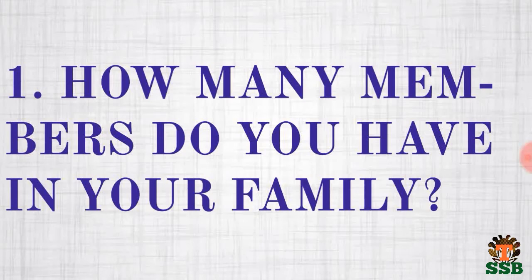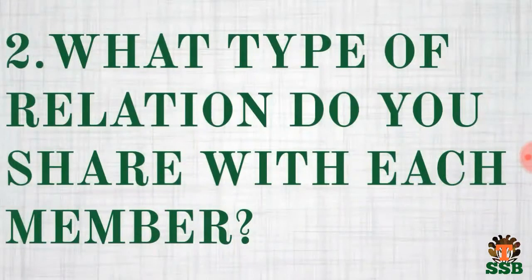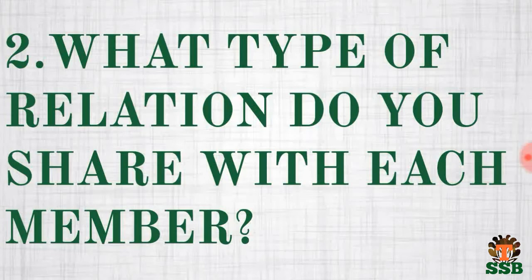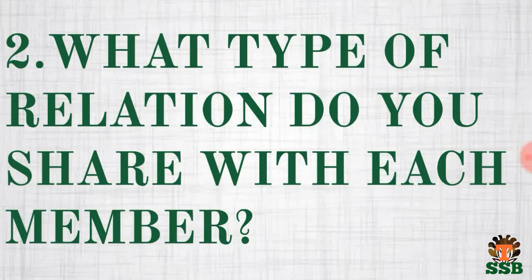Moving to the second question: what type of relationship do you share with each member? This is a tricky question. Don't bluff — speak the truth, but make sure it is relevant. If you have a good relationship with your family members, speak it out. Use different adjectives — for example: 'I have a friendly relationship with my father, a loving relationship with my mother, a caring relationship with my grandmother.'